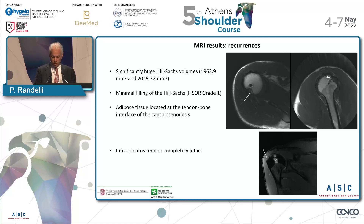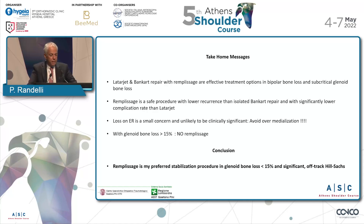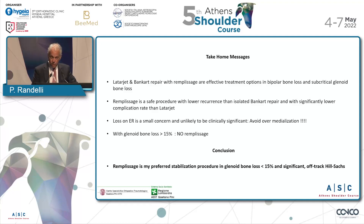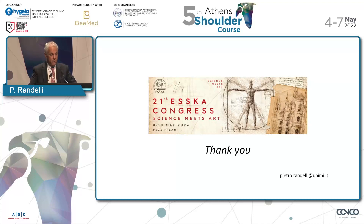Take-home message: Latarjet and Bankart repair with remplissage are effective treatment options in bipolar bone loss and subcritical glenoid bone loss. Remplissage is a safe procedure with lower recurrence rate than isolated Bankart repair and significantly lower complication rate than Latarjet. Loss of external rotation is a small concern and unlikely to be clinically significant. Avoid over-medialization — that's the secret. In conclusion, remplissage is my preferred stabilization procedure for glenoid bone loss less than 15% and significant off-track Hill-Sachs lesion. Thank you very much for your attention.